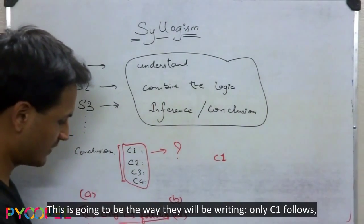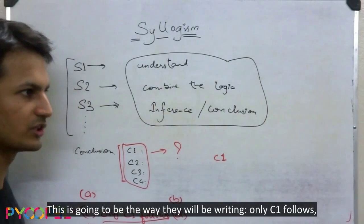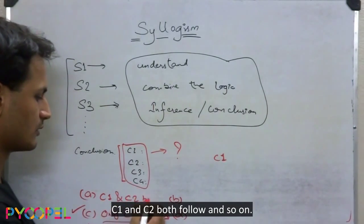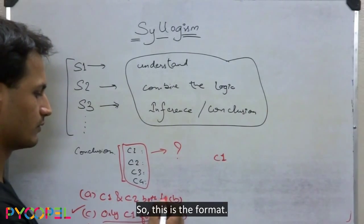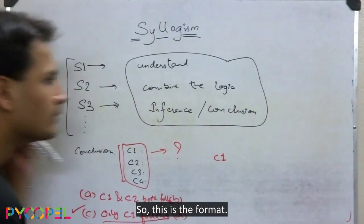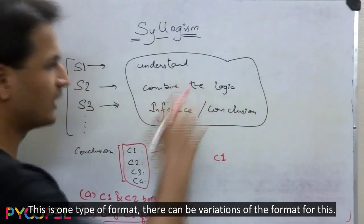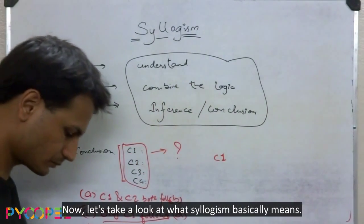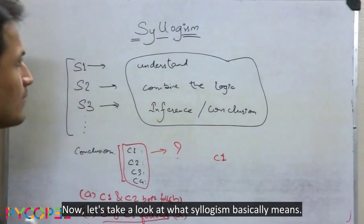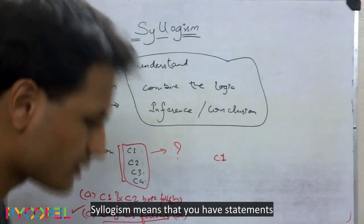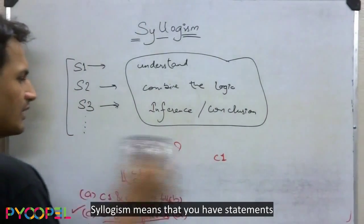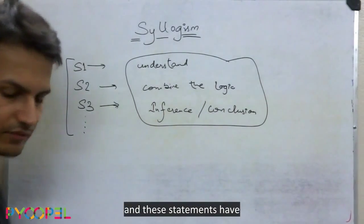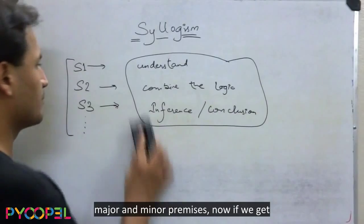The options will be written as: 'only C1 follows,' 'C1 and C2 both follow,' and so on. This is the format, and there can be variations of this format. Now let's take a look at what syllogism basically means. Syllogism means that you have statements, and these statements have major and minor premises.